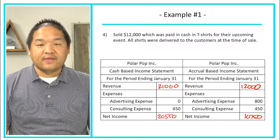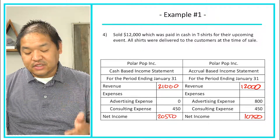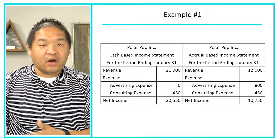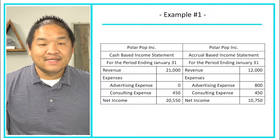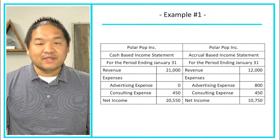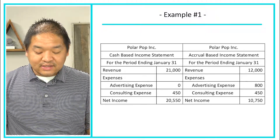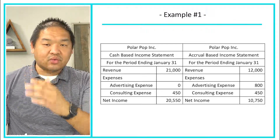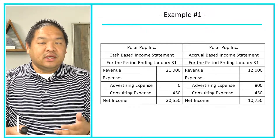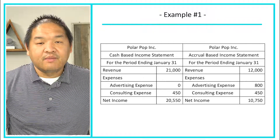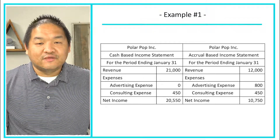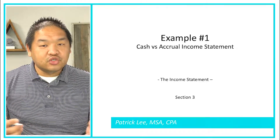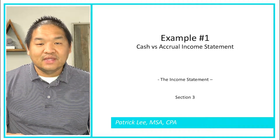Here's another look at the completed answer after all the work is done for both the cash and accrual basis columns. In this case, cash-basis income is higher than accrual-basis income — that's fine because we treat transactions differently based on the rules we follow. That concludes our example on the cash versus accrual income statement.